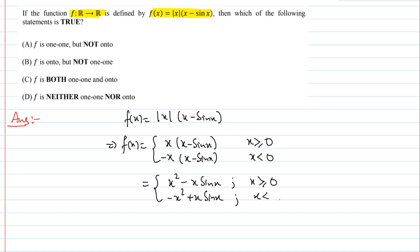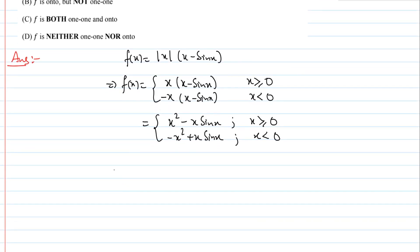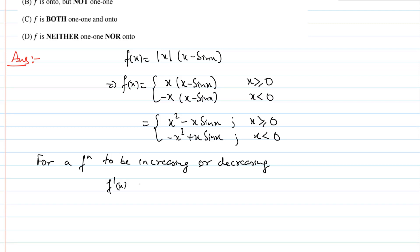अब हमें check करना है कि function 1-1 है या onto है। उसके लिए हम check करेंगे कि function increasing है या decreasing है। For a function to be increasing: f'(x) > 0, और decreasing के लिए f'(x) < 0। तो मतलब हमें इसका derivative check करना पड़ेगा।